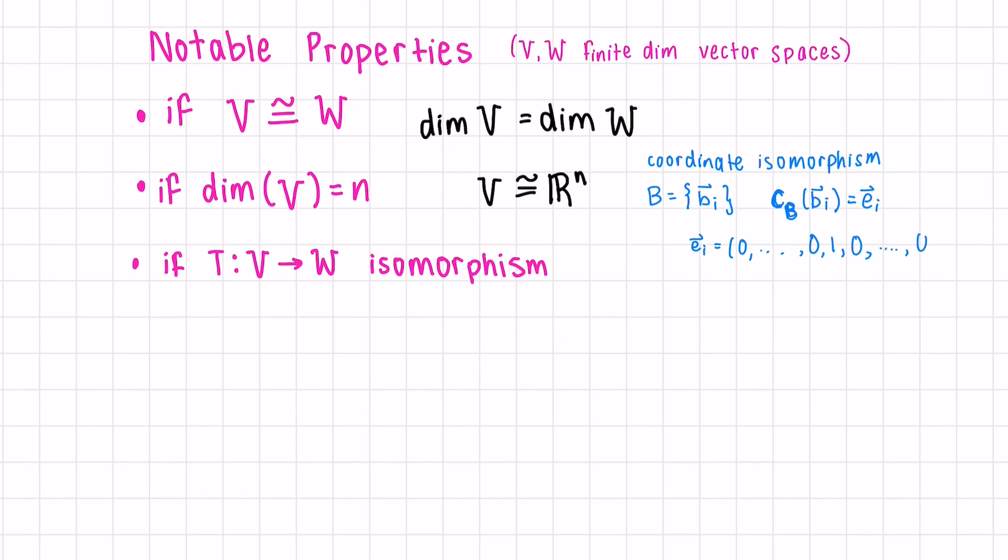The point of this is that any vector in V can be rewritten as a linear combination of these Bs, and their coefficients become the coordinates of the vector in Rⁿ. But we'll get more into these details later.